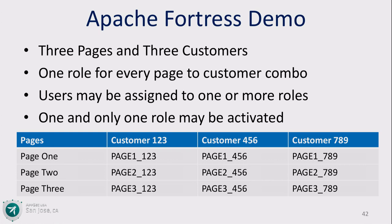We're going to do a quick look at this demo because we want to look at an RBAC policy. We've got a simple web application with three pages and business data corresponding to customers 1 through 9. I've established a fine-grain authorization policy where every page has a customer relationship, so if you want to hit page one for customer 1, 2, 3, you have to activate that role.